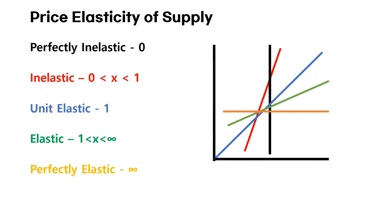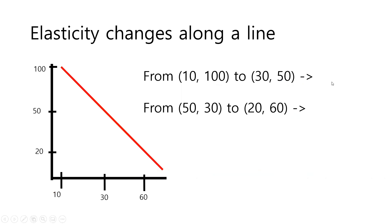Didn't we just talk about types of elasticity with a linear curve? Yes, that is true. But what is important is that elasticity differs along a line. Elasticity isn't actually the same as the slope, since it is not talking about the definite changes in numbers but instead the change in percentage.